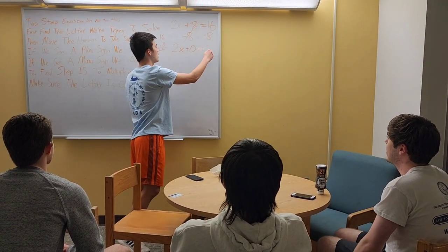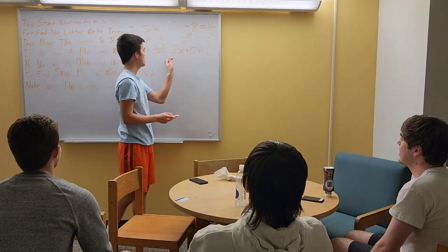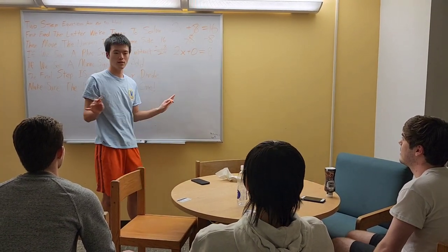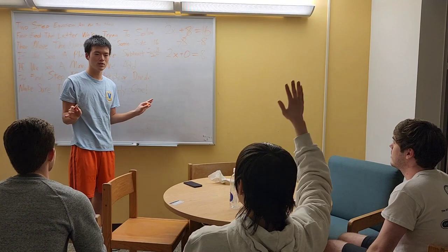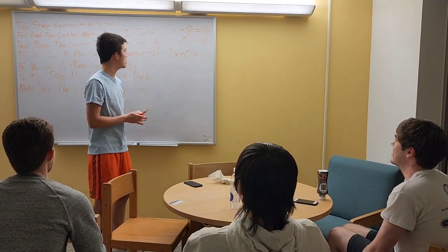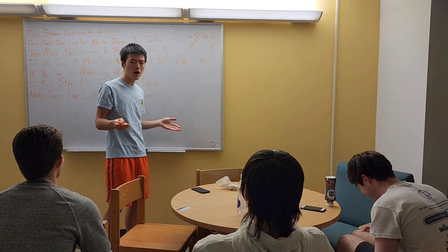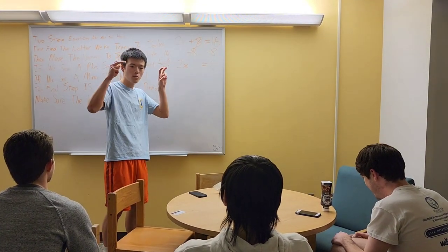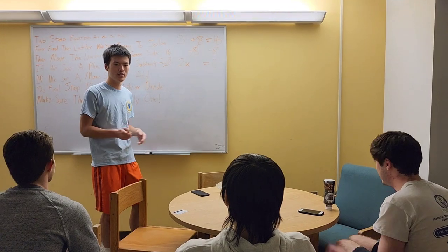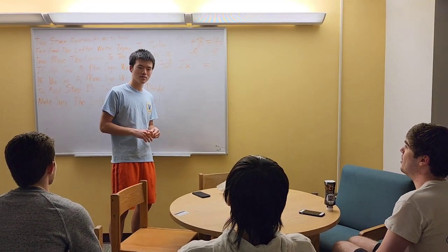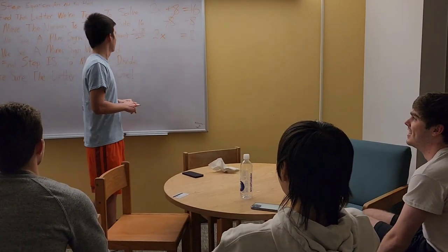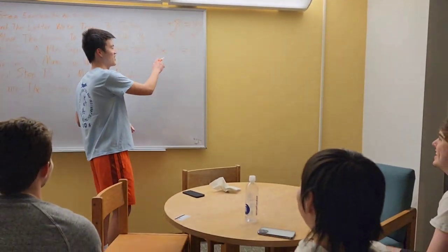So right here, I'll just write this out. So 16 minus 8 is 8. So we end up with this. Is everything clear? Does anyone have any questions? "What do we do with the 0?" Zero? You can erase it. Zero does nothing. If you have 5 pieces of pi and you have 0 pi, you still have 5 pieces of pi. Does that make sense? No. Hmm.